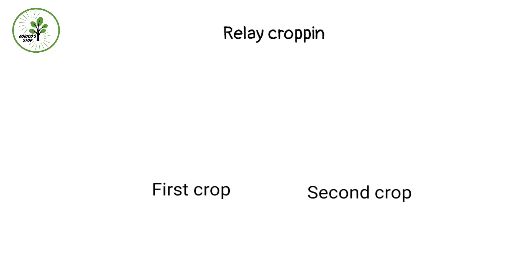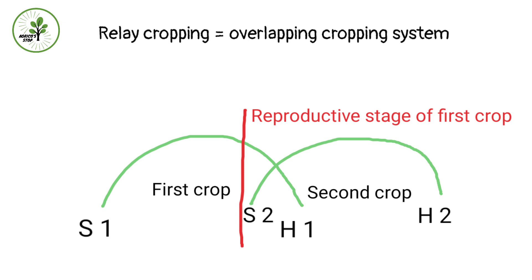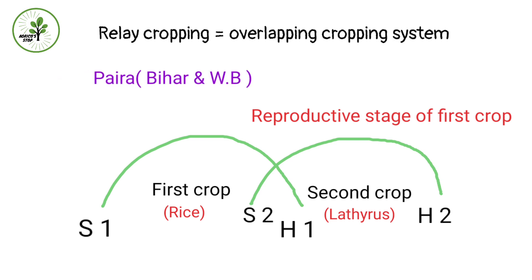Relay cropping is similar to sequential cropping, but here overlapping takes place — so it is called an overlapping cropping system. The second crop is planted after the first crop has reached its reproductive stage but before it is ready for harvest. A famous example is sowing of lathyrus or any pulse before the harvesting of rice in lowland areas. This system is called paira in Bihar and West Bengal, and utera in Madhya Pradesh.